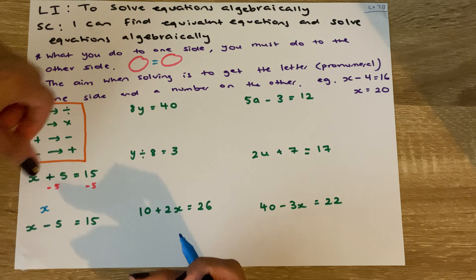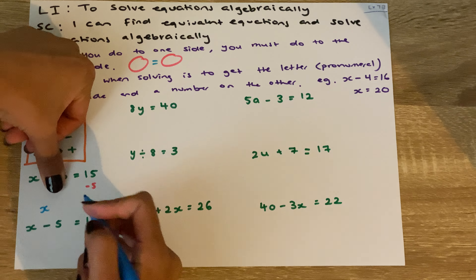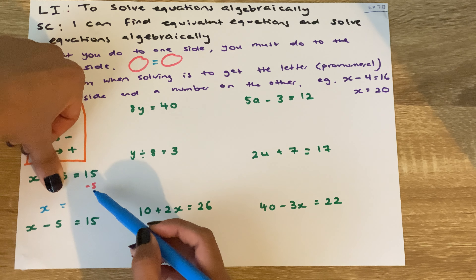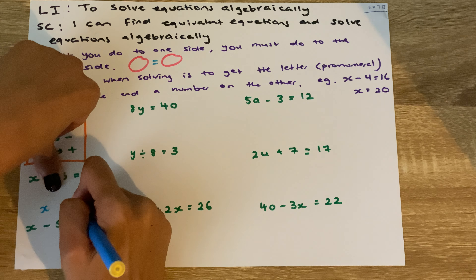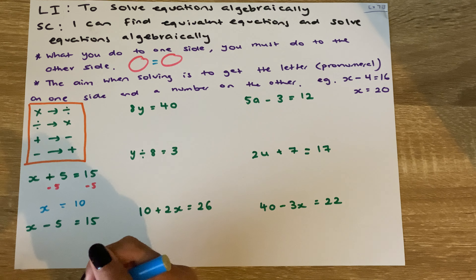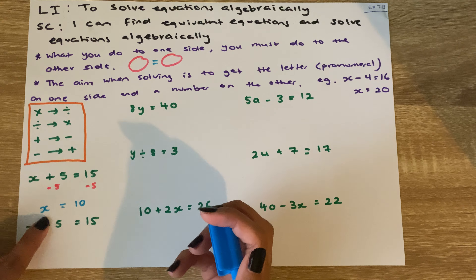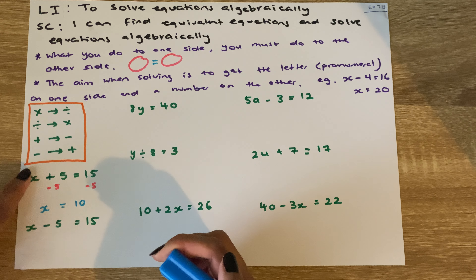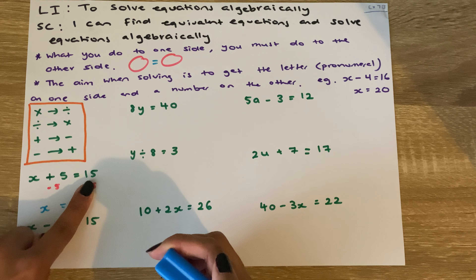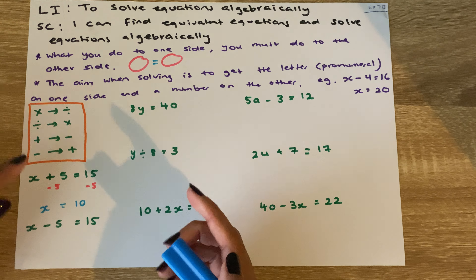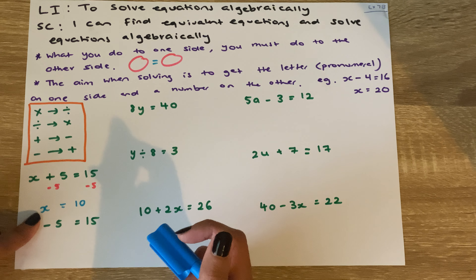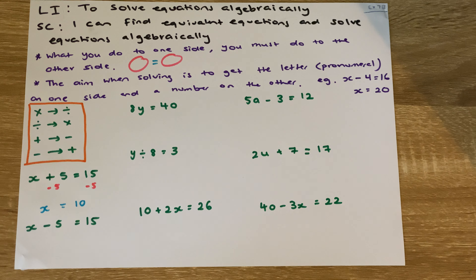On this side, I'm left with 15 take away 5, which is 10 — so x equals 10. We can substitute that back to check: if x equals 10, then 10 plus 5 equals 15. That's correct, which means x must be 10 and this equation is true for x being 10.